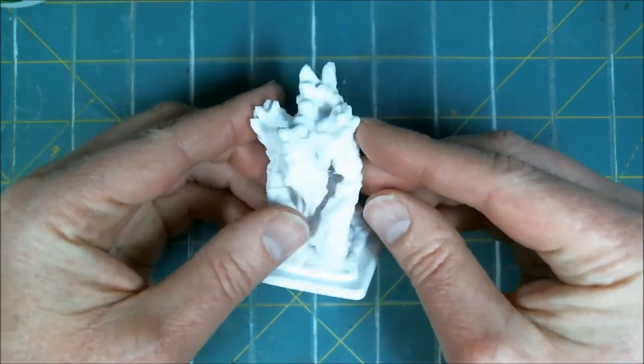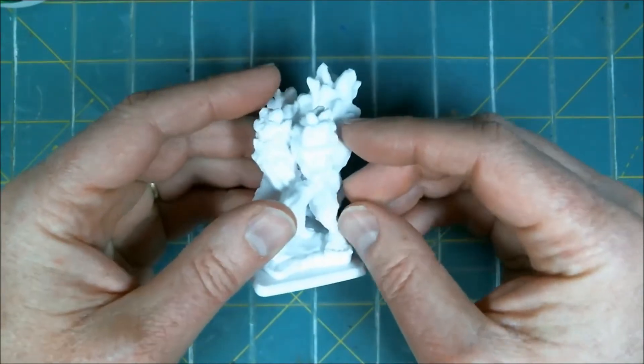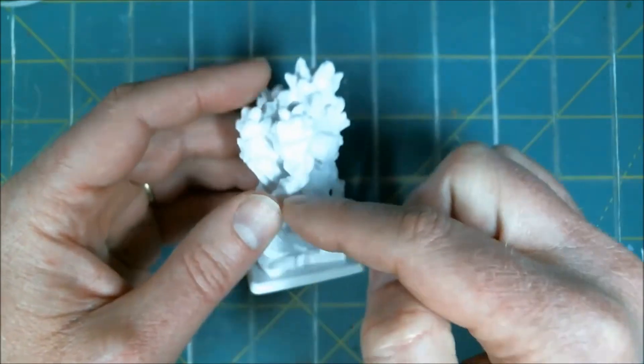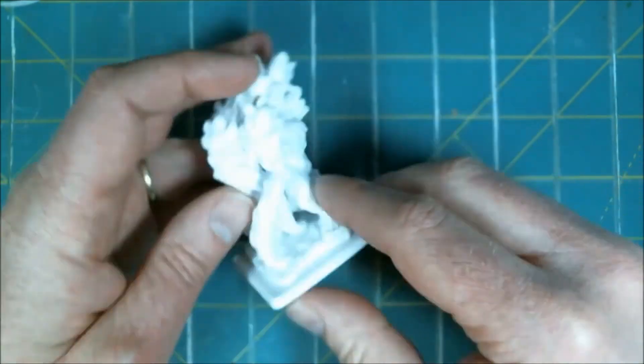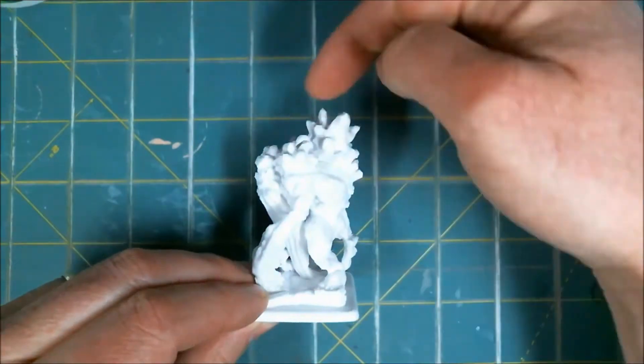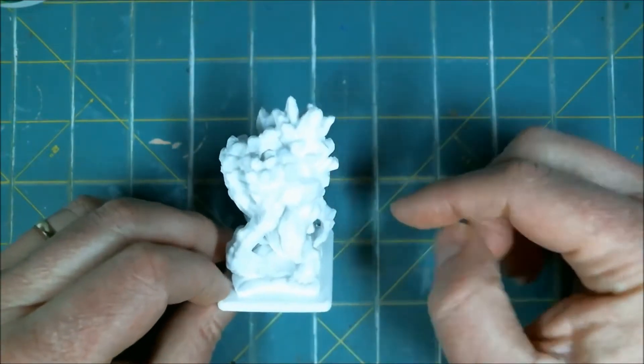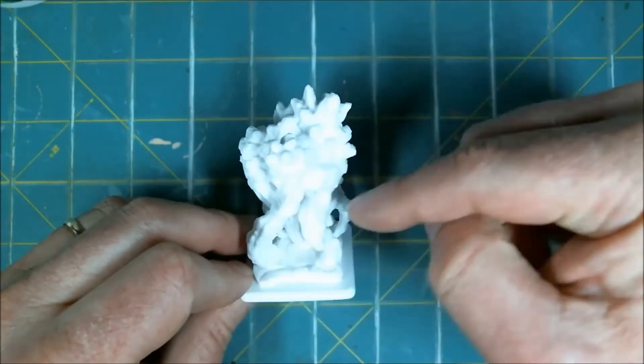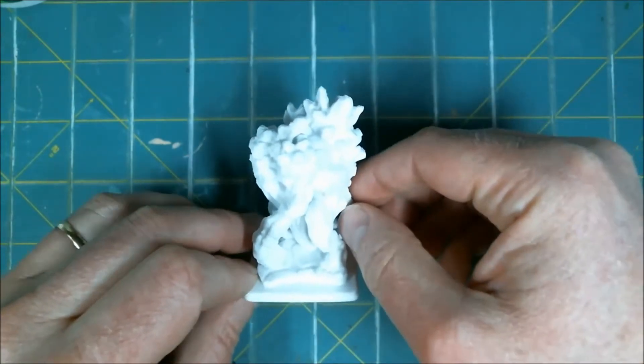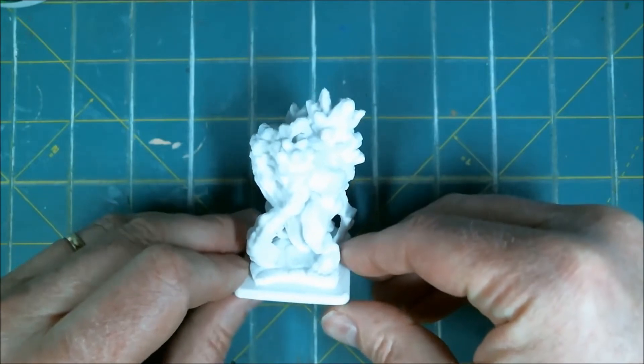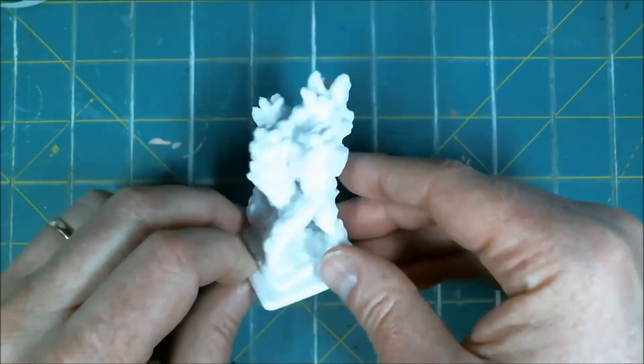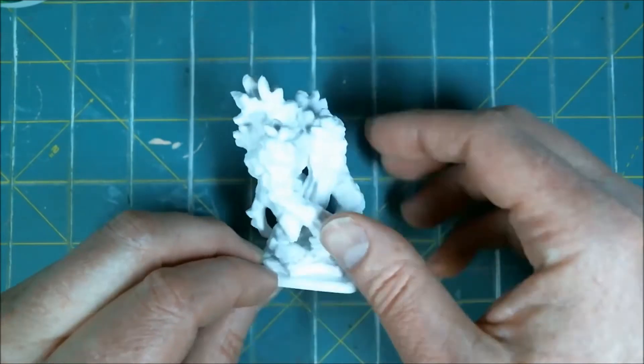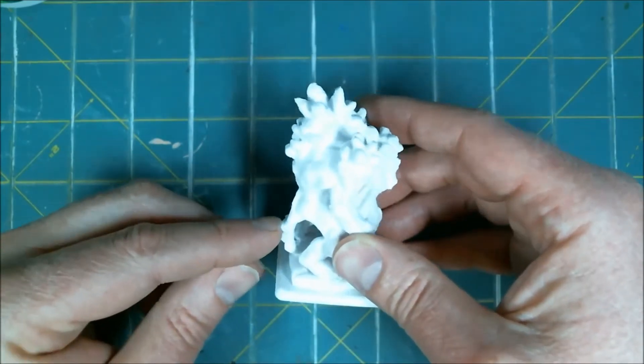He did scare me while he was printing. These legs here started to curl upwards. And the print head, as it would come across, and it printed from the bottom to the top, the legs curled up and it would hit with the print head every time. I've had a couple that have peeled off the tape, and I think that's what happened.